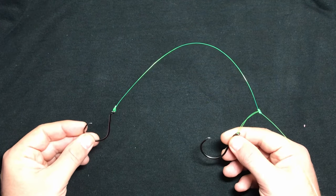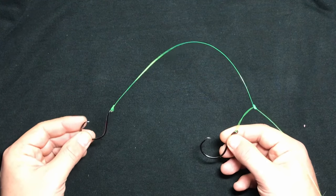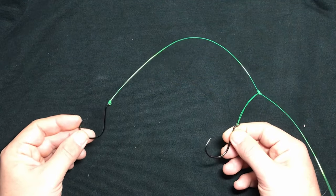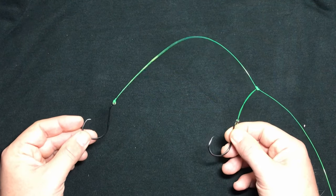Now you can do this with all different types of line - mono, floral, and braid. And you can do it with really heavy line like I've got right here. This is 40 pound fluorocarbon that I use for catfish.